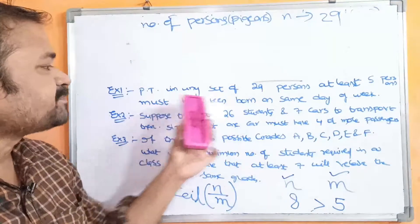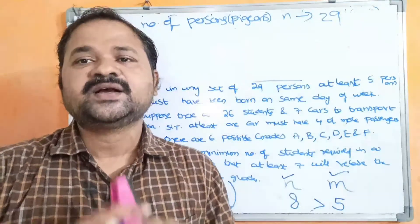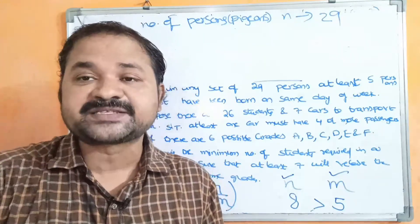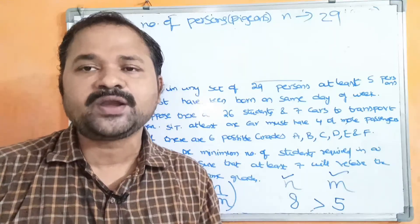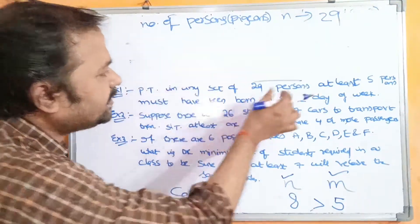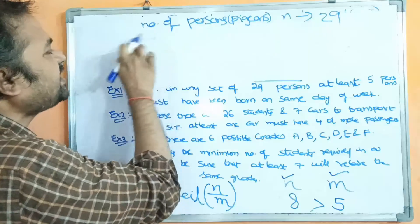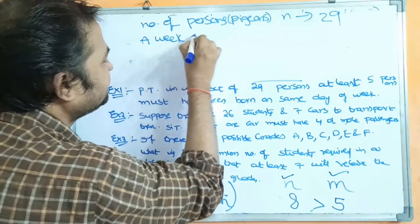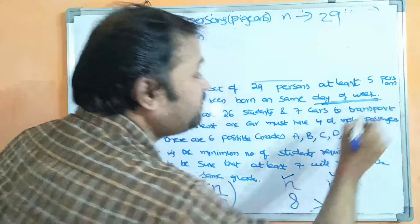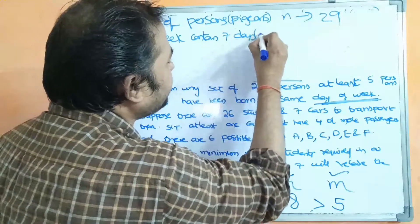At least 5 persons must have been born on the same day of the week. So we have to prove that out of 29 persons, at least 5 persons must have been born on the same day of the week. A week contains 7 days, and those 7 days are nothing but the pigeonholes.